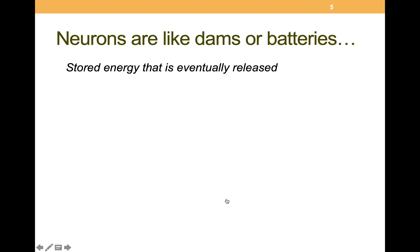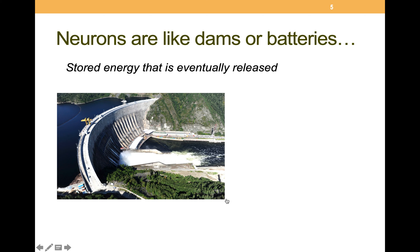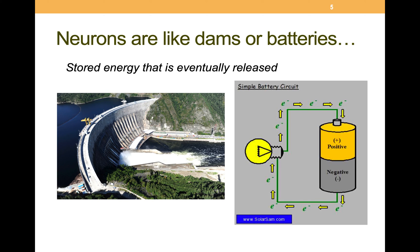So, what do neurons and batteries have in common? They both store energy that is eventually released. Think of a dam — a huge wall that keeps the force of downstream water contained. Open the floodgates, and hydroelectric power is produced as water passes through the dam into the river below, captured and converted by a turbine. A battery works similarly by separating its positive and negative terminals, which are made of different chemicals, preventing the flow of ions or electrons until the battery is connected to a device like a light bulb, and energy is released and allowed to flow.